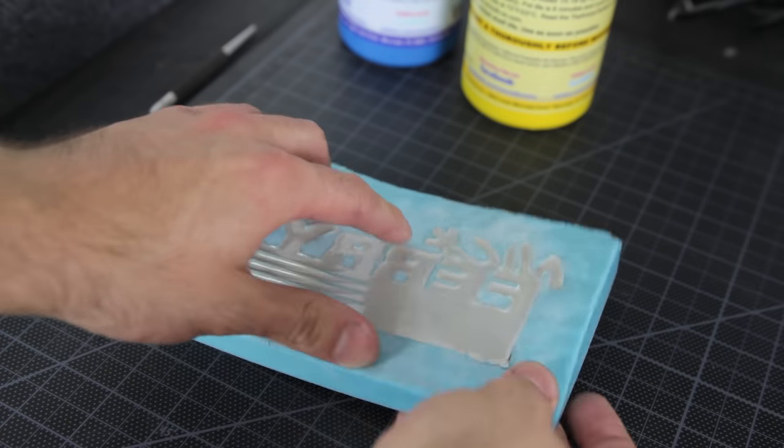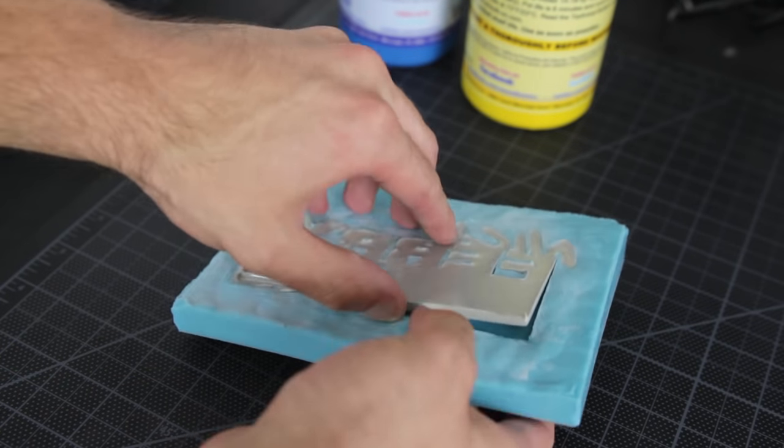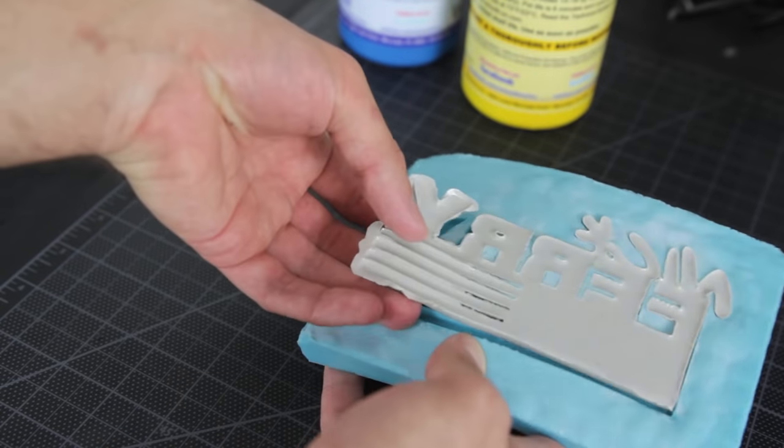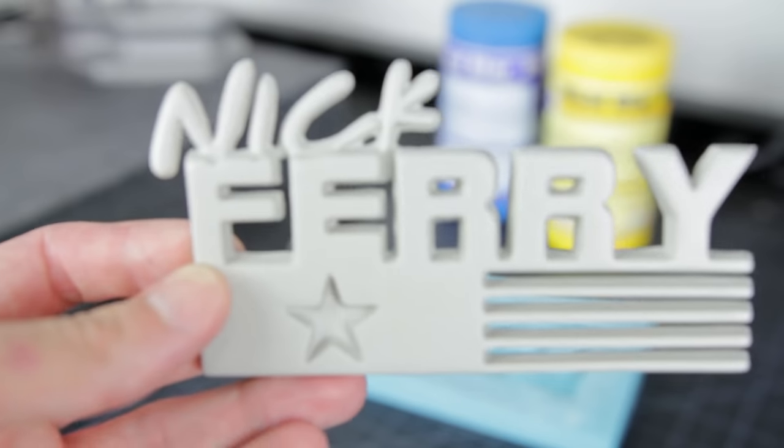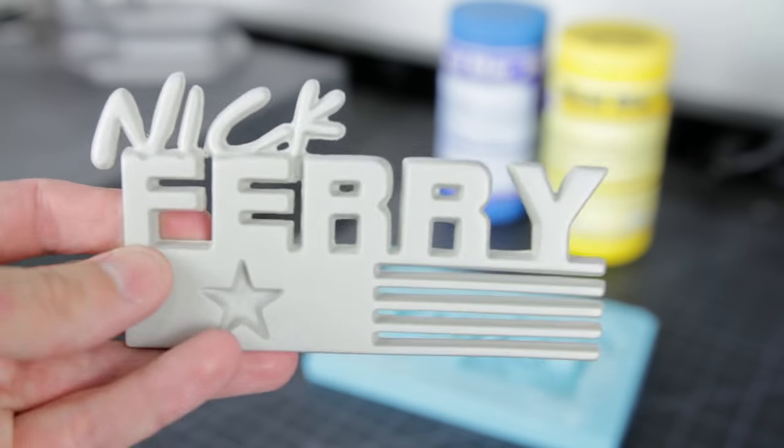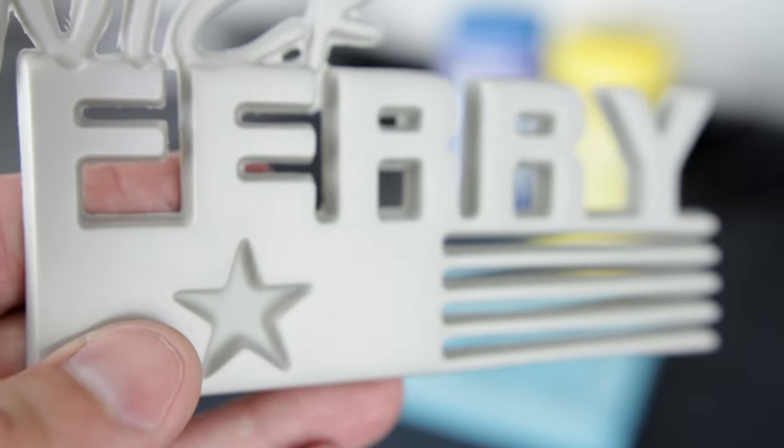Once cured, I pull the resin part out slowly from the mold. Remaining flashing can be removed with a fingernail or exacto knife. That's it. Finished bubble-free resin copy.